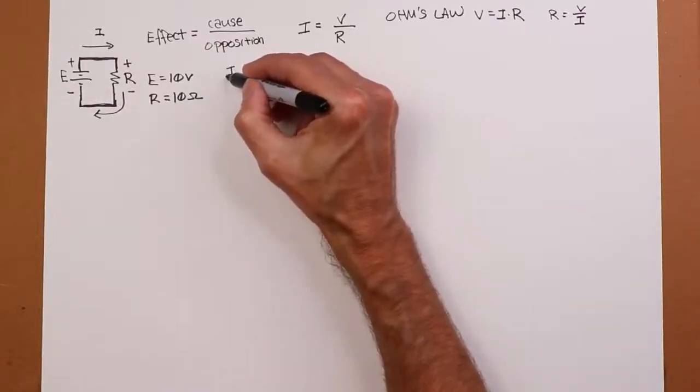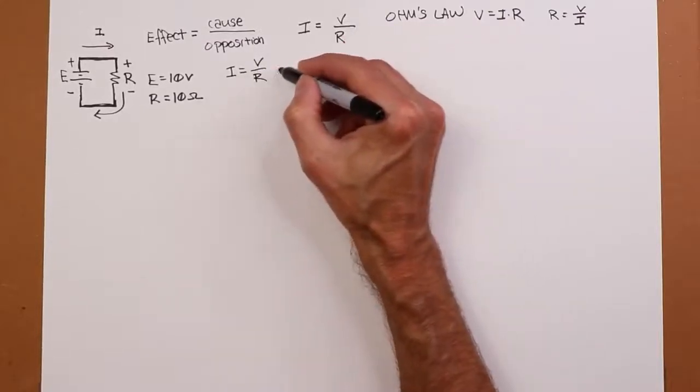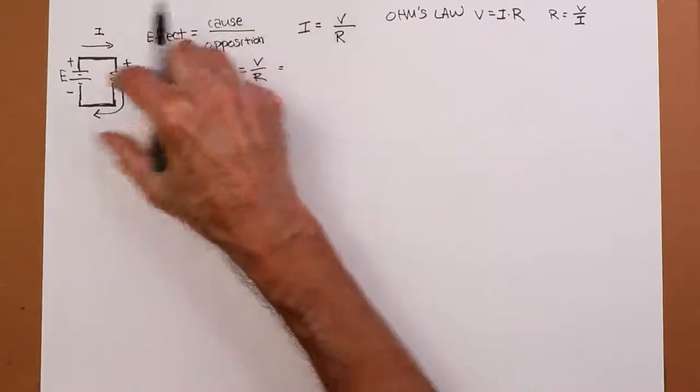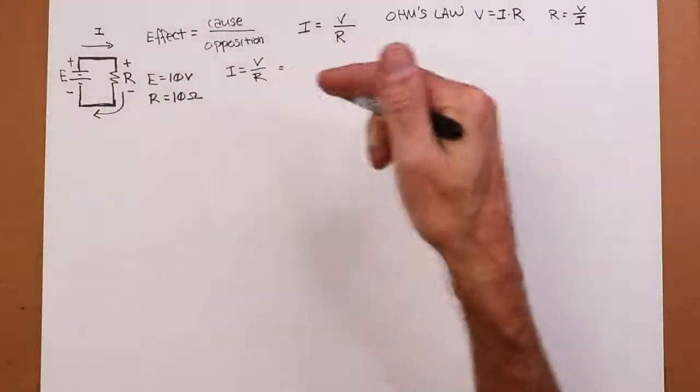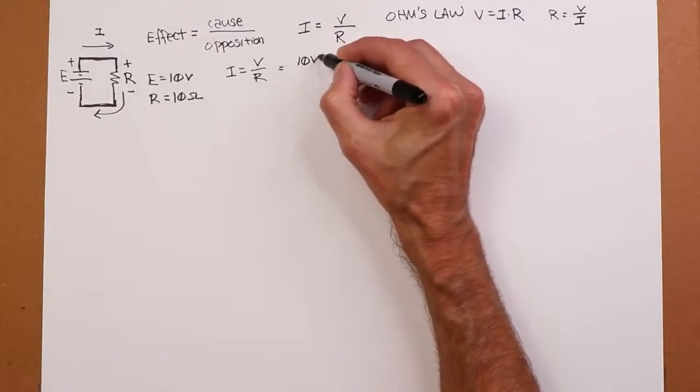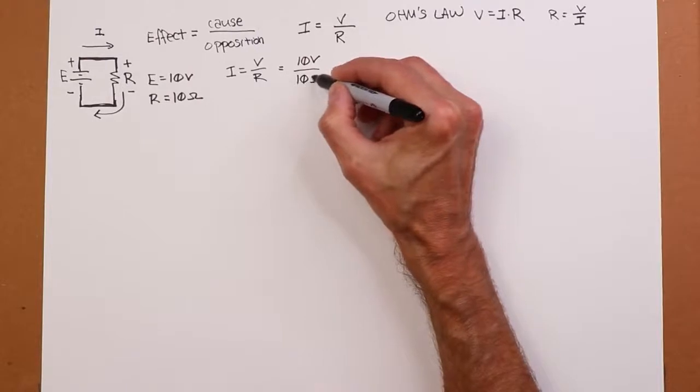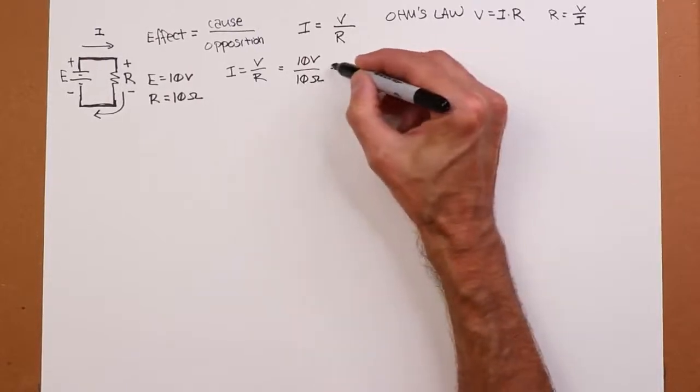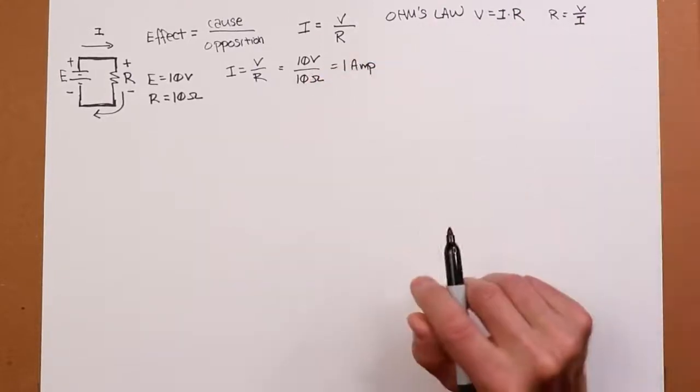In any case, let's figure out what the current is. So I is equal to V divided by R, which would be 10 volts. Because if we have 10 volts here and it's sitting directly across the resistor, then the resistor is also getting 10 volts. Because the real question is what is the voltage across the resistor? So 10 volts divided by 10 ohms is 1 amp of current. Voila!